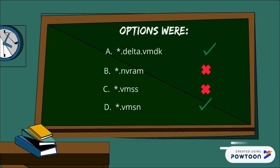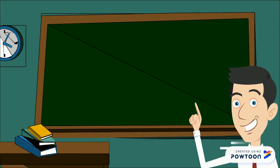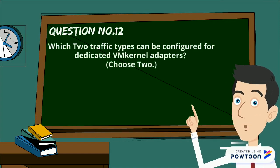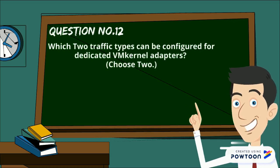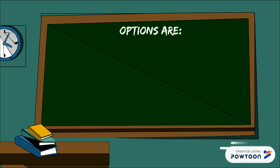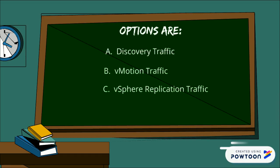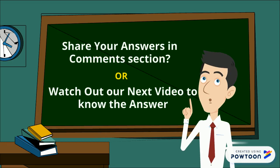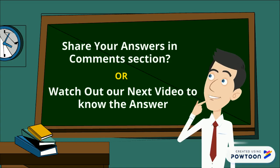Here is question number 12: which two traffic types can be configured for dedicated VM kernel adapters? Choose two options. Your options are: discovery traffic, vMotion traffic, vSphere application traffic, and vSphere custom traffic. Share your answers in the comment section or watch our next video to know the answer.